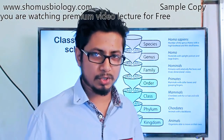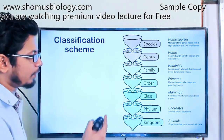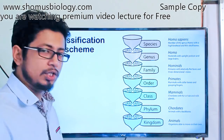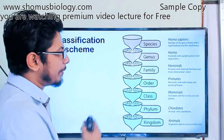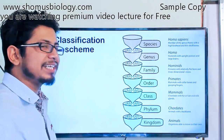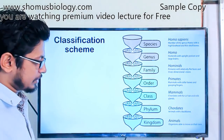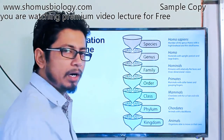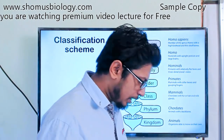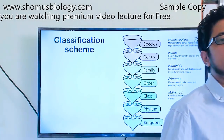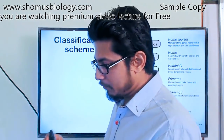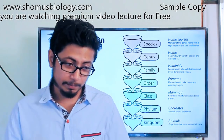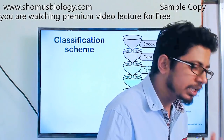The easiest way to remember this classification hierarchy is the mnemonic: 'Dumb King Philip Came Over From German Soil' — D for Domain, K for Kingdom, P for Phylum, C for Class, O for Order, F for Family, G for Genus, S for Species.